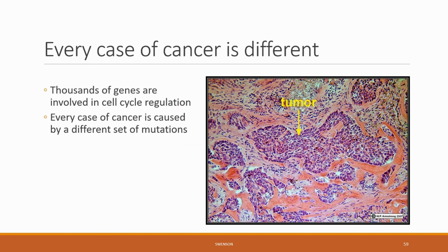There are thousands of genes that are involved in cell cycle regulation. Every case of cancer is caused by a different set of mutations, making its treatment not only difficult because they are our own cells causing the disease, but also because they are very similar to normal cells — making it difficult to have a single solution for each and every case through the use of drugs.